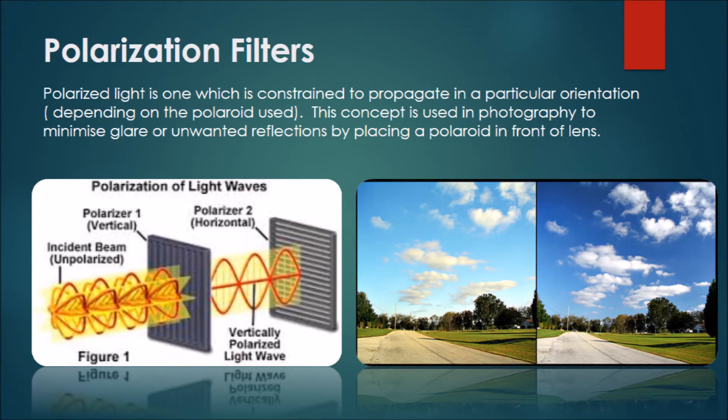All these techniques become redundant if we can't eliminate unwanted light. Hence, we use polarization filters. Polarized light is the one constrained to propagate in a particular orientation. This concept is used in photography to minimize glare or unwanted reflections by placing a polaroid in front of the lens. When we take a photo of the sky from a normal camera, it has too much reflection and glare, but with a polaroid, the picture becomes more intensified and of better quality.